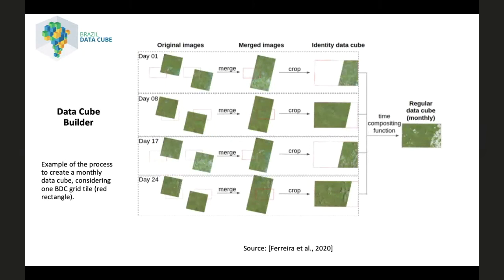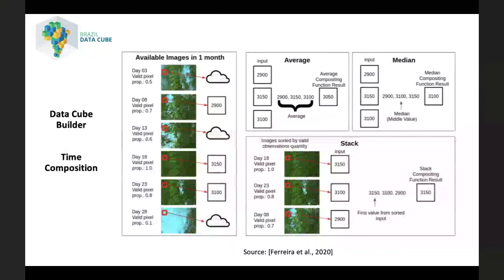For each month, we first select the images that intersect the grid tile. In this example, we can see that we have images in four distinct days in a month: day one, day eight, day 17, and day 24. After that, we reproject and merge these images by day in a mosaic, and then we crop the merged images by tile. The last step is to apply a time composition function to combine all these images in a month. The time composition is applied just on valid observations that are not detected as cloud or cloud shadow by the quality assessment band.